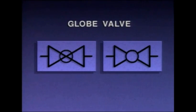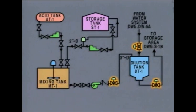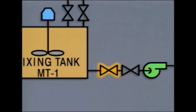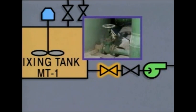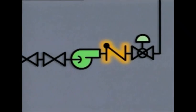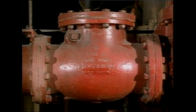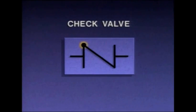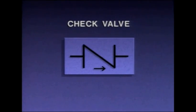Globe valves are often used to regulate fluid flow because they can be partially opened or closed to adjust flow rate. You may see globe valves represented on diagrams by either of two symbols. There are three globe valves — one in each line to the dilution tank and one in the line to the storage area. Gate valves at the bottom of a tank are normally positioned fully open to allow flow or fully closed to isolate equipment. Check valves are designed to allow fluid flow in only one direction. There's usually some notation indicating the direction of flow — for example, a dot indicates the side where fluid enters. An arrow symbol may also be used to indicate direction of flow through a check valve.